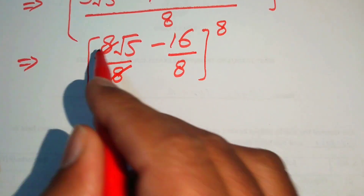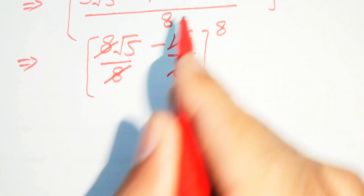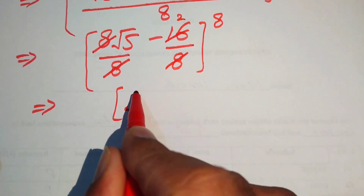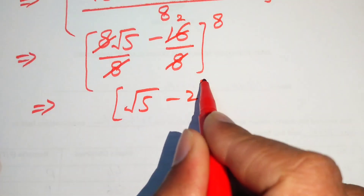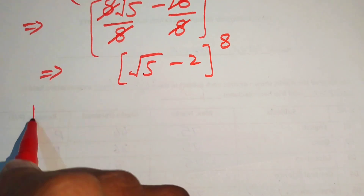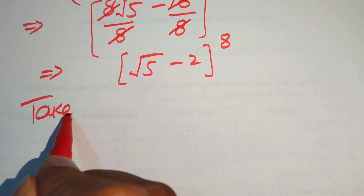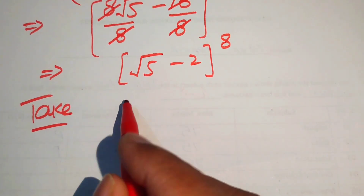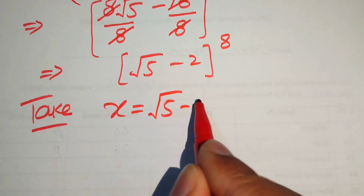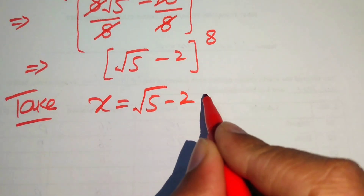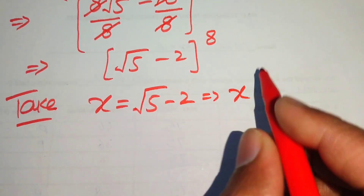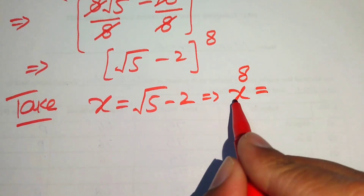The 8 in the numerator and denominator cancel, and 16 over 8 gives 2, leaving us with (√5 minus 2) raised to the power of 8. We now take the substitution x equals √5 minus 2, so we need to find the value of x to the power of 8.